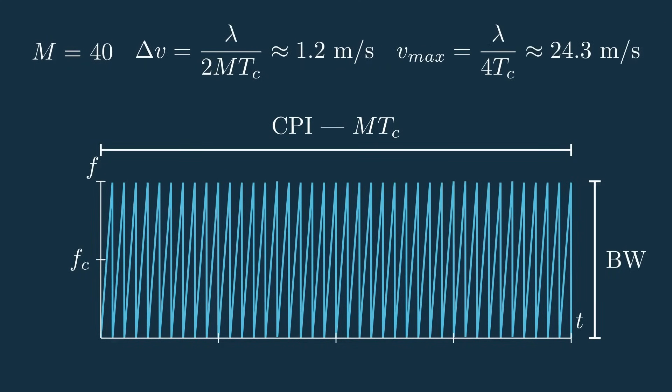Also, while we're at it, we can find the maximum velocity we can detect for our system, which is a function of the chirp time of this waveform, and it comes out to 24.3 meters per second.